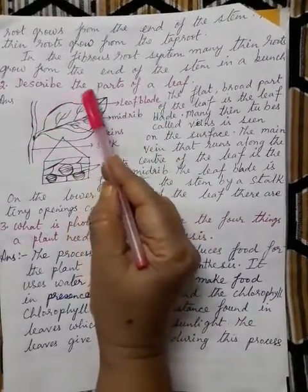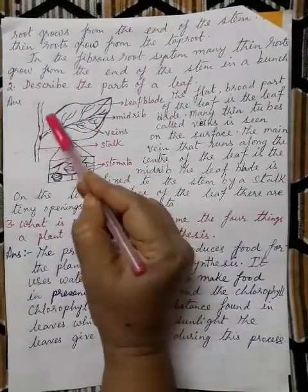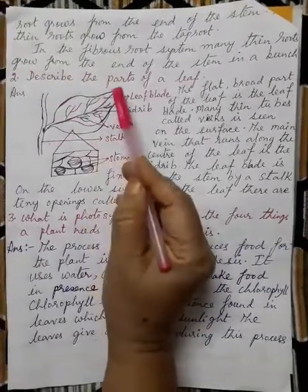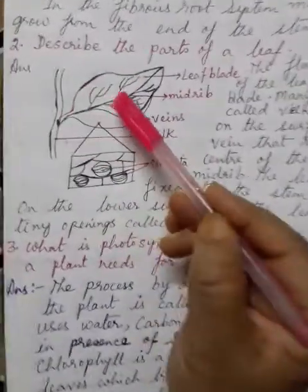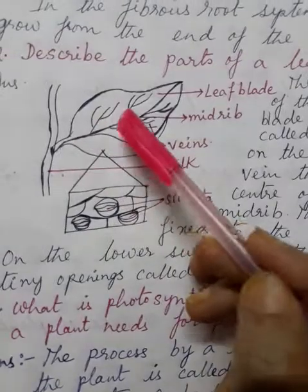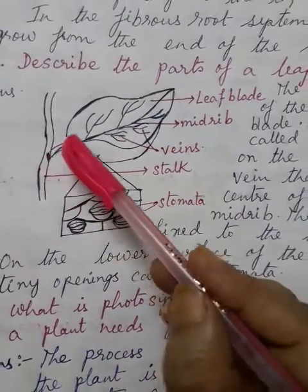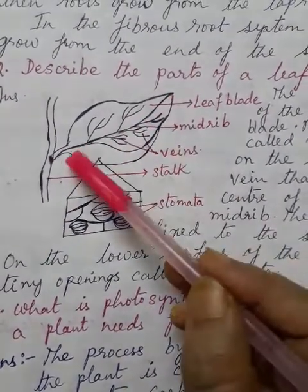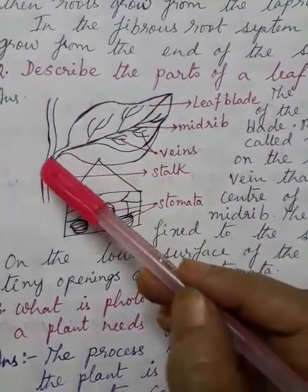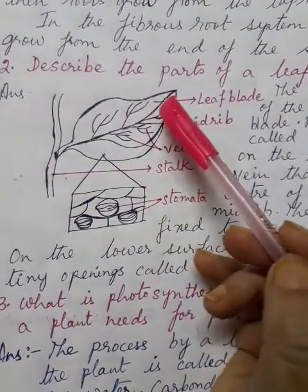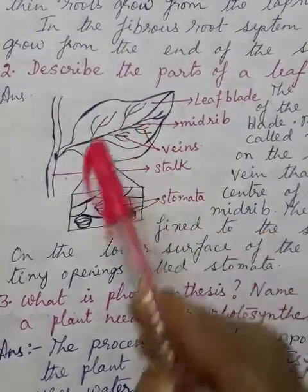This whole flat broad part of the leaf is called the leaf blade. In the leaf we see lots of small veins going throughout — those are simply called the veins. Through the center of the leaf passes the main vein, which is called the midrib. All the side veins are simply called the veins.